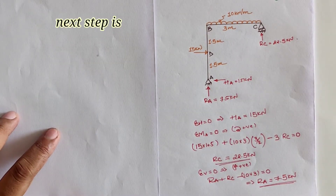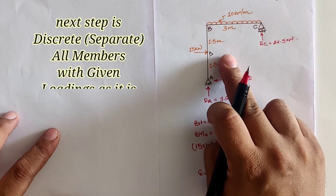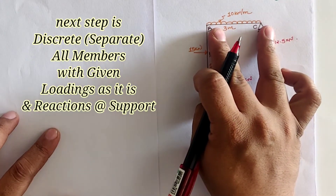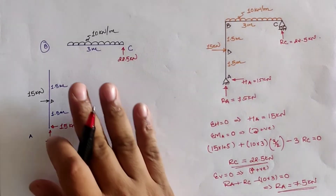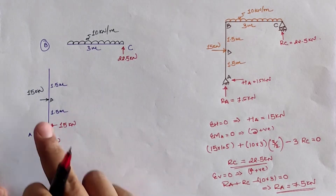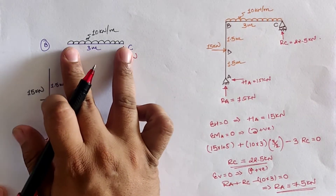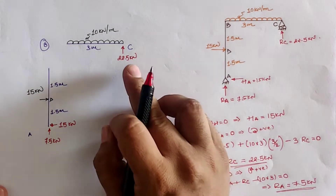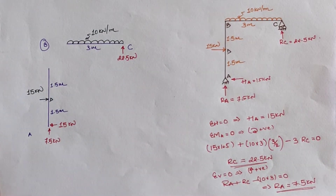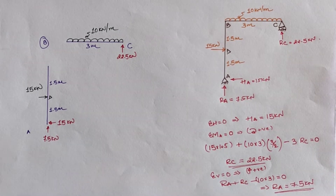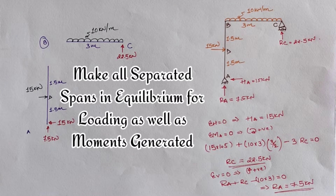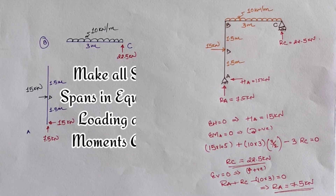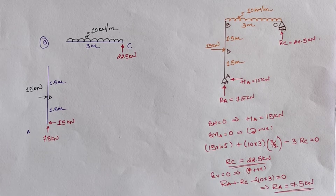The second step is to discretize the elements of the frame, meaning the column and beam must be separated and redrawn. The loading on each column and beam is indicated as given in the frame, along with the reactions found from the three equilibrium conditions. After discretization, we equalize or neutralize each column and beam using sigma H = 0, sigma V = 0, and moment at joint = 0.